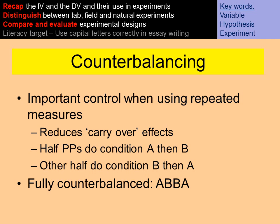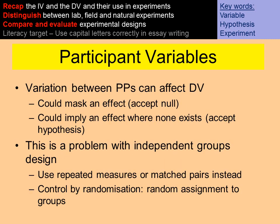Counterbalancing is important when using a repeated measures design because it reduces carryover effects. Half the participants do condition A then B, and the other half do condition B then A — all participants still do both conditions but in a different order. Participant variables are variables that can affect results based on who a participant is. They could mask an effect, meaning you accept the null hypothesis, or lead you to accept that there was a change when there wasn't. This can be a problem with independent measures design and can be controlled through randomization — randomly assigning participants to groups.